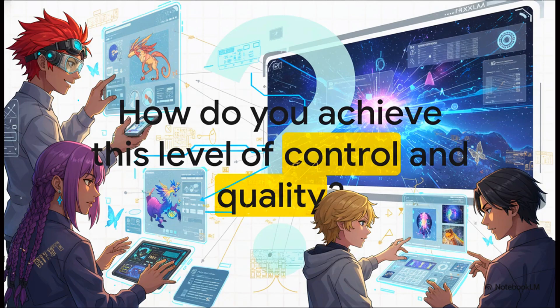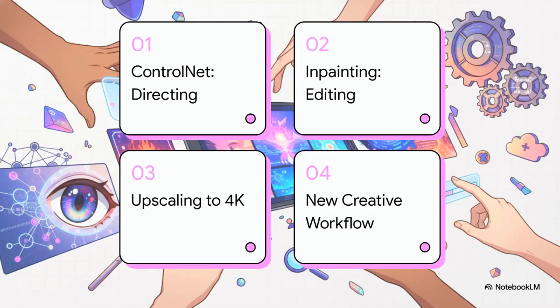Someone who can dictate the exact composition, the exact pose, and get that incredible super high resolution detail. Well, that is exactly what we are going to break down for you today. We're going to cover three super powerful techniques: first, using ControlNet to direct your image; then inpainting, which is all about making those tiny precise edits; and finally, upscaling to get breathtaking 4K results. Think of these as your new creative power-ups, and we're starting with the big one — taking control.